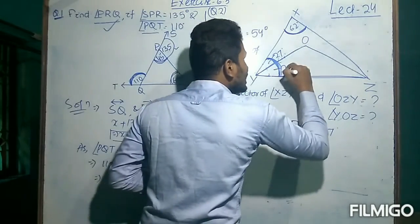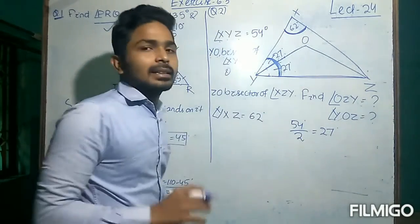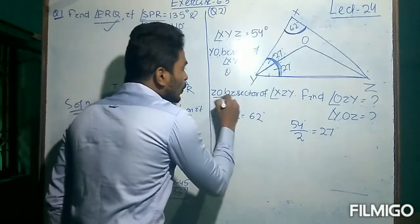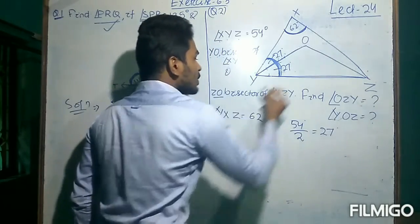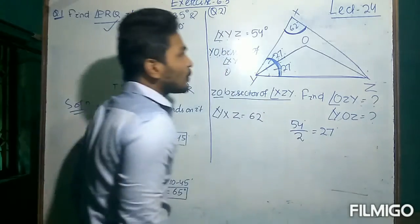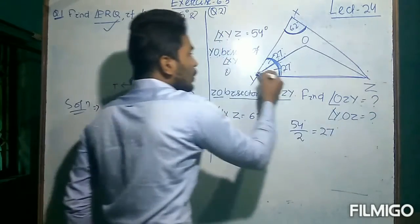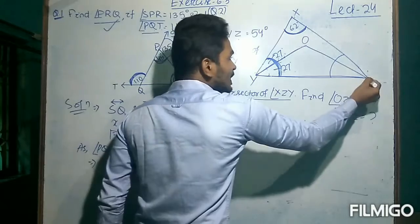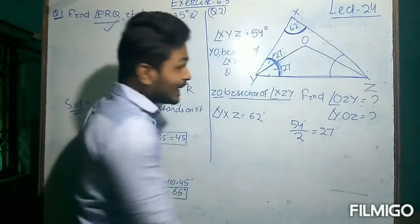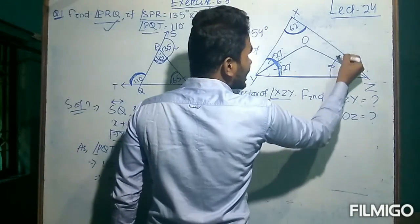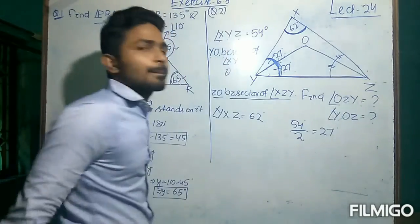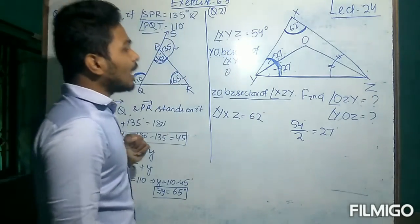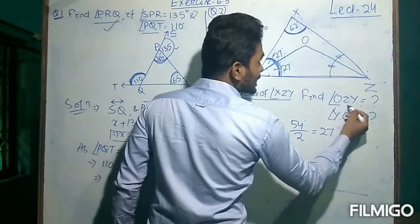Similarly, ZO is the bisector of angle XZY. That means this angle is equal to this angle. According to the data given in the question, you have to find angle OZY — suppose this angle is X — and angle YOZ — suppose this angle is Y. So we have to find this small angle and this angle.